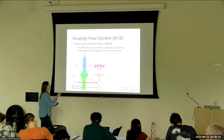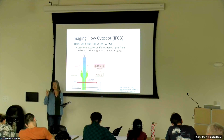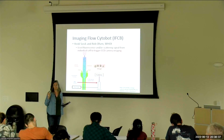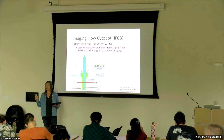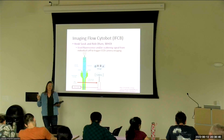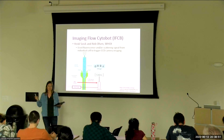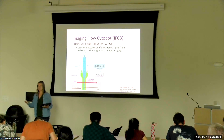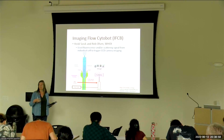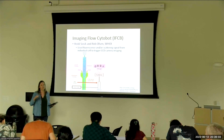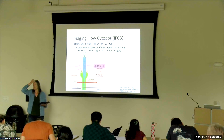You can trigger on scattering, which means you'll get a picture of every particle. There are a lot of particles in the water — detritus, fecal pellets, junk — and you'd get an image of each one. If you're interested in carbon, you might trigger on scattering. If you're interested in phytoplankton, you trigger on fluorescence, so you only image particles that absorb blue light. You might still capture some dead cells because they retain chlorophyll and still fluoresce.